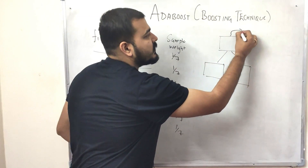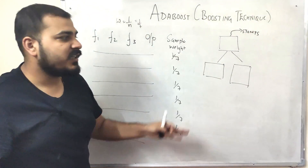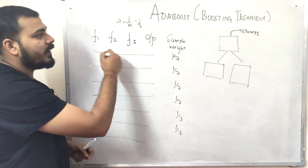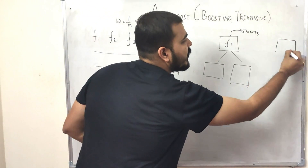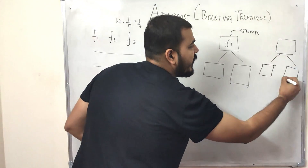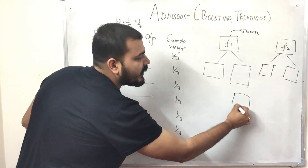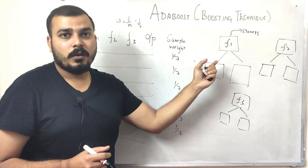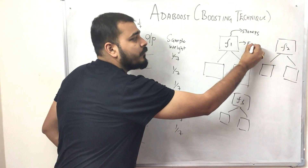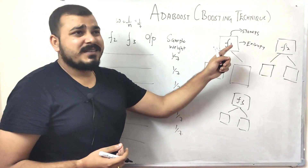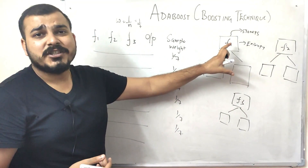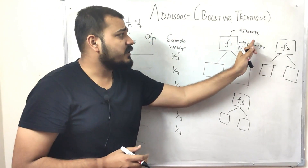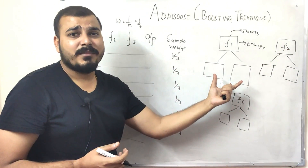These shallow decision trees are called stumps. A stump is a decision tree with just one depth, having two or more leaf nodes. We consider feature F1 and create one stump, then F2 for another stump, and F3 for another. To select the first base learner model, we use entropy or Gini coefficient. Whichever stump has the lesser entropy is selected as the base learner for the first sequential model.